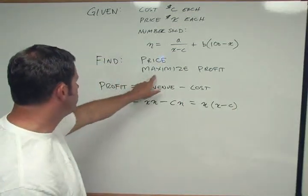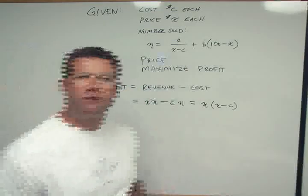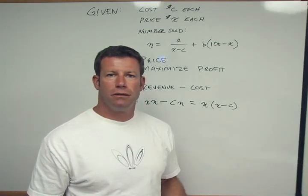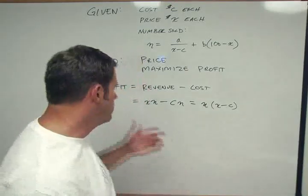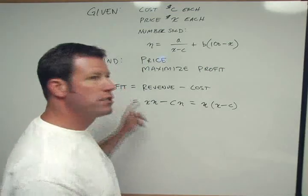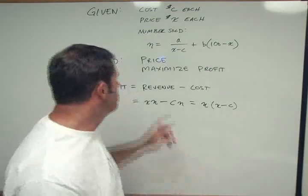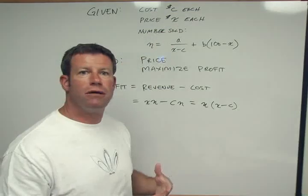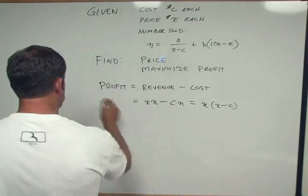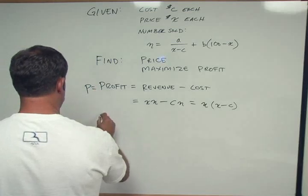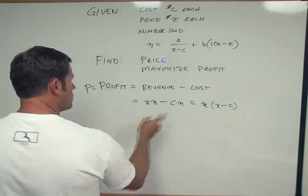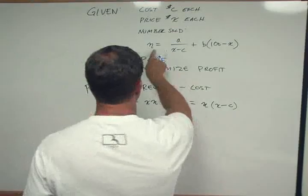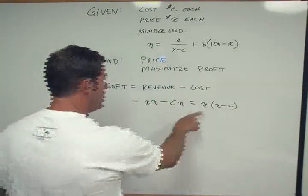So now we want to maximize profit. Now we can introduce some calculus to do the maximization. So we're going to take the derivative of profit with respect to the thing we want to find, which is price, X, and then we'll solve it. So now let's substitute in our convenient friend here, N, into this equation.